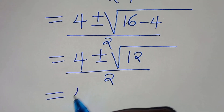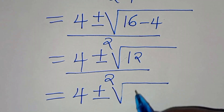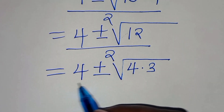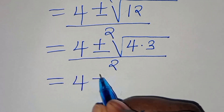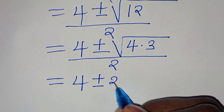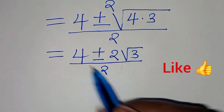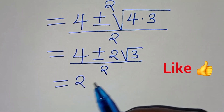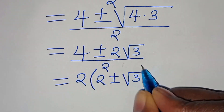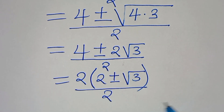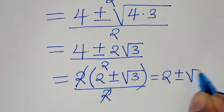So now we have 4 plus or minus — we can express the square root of 12 as square root of 4 multiplying by 3, everything divided by 2. The square root of 4 is 2, so we have 4 plus or minus 2 times square root of 3, divided by 2. In the numerator, 2 is common so we factor out 2, giving 2 times the quantity 2 plus or minus square root of 3, divided by 2. Simplifying gives 2 plus or minus square root of 3.